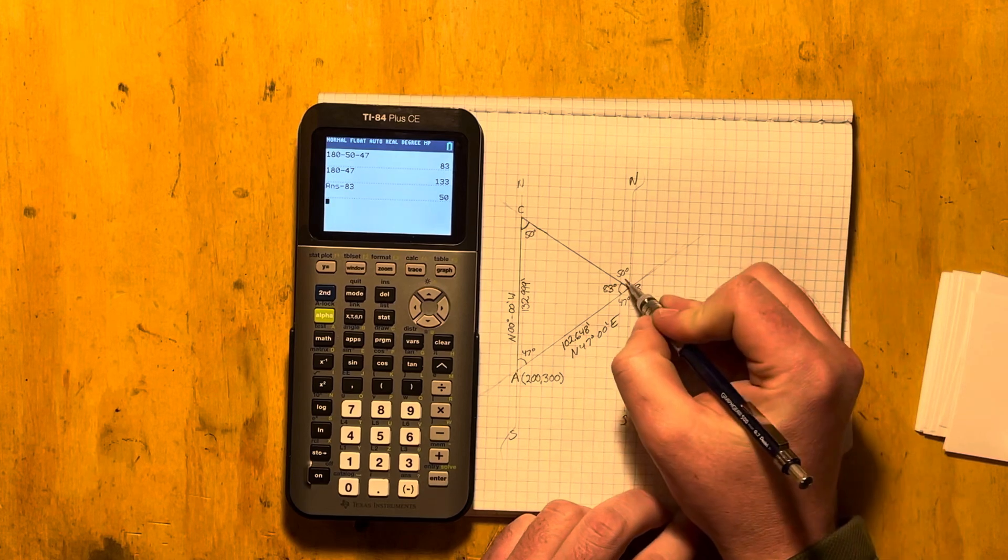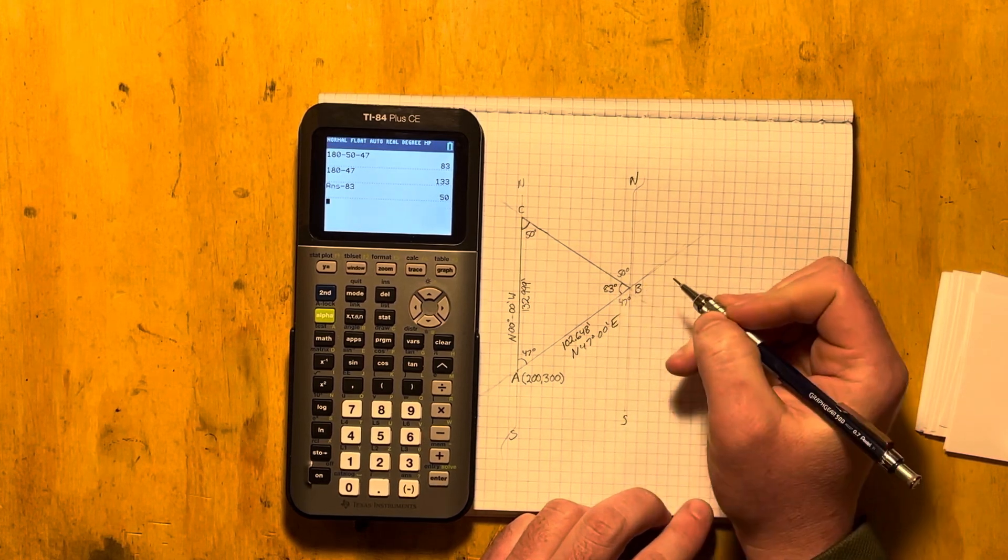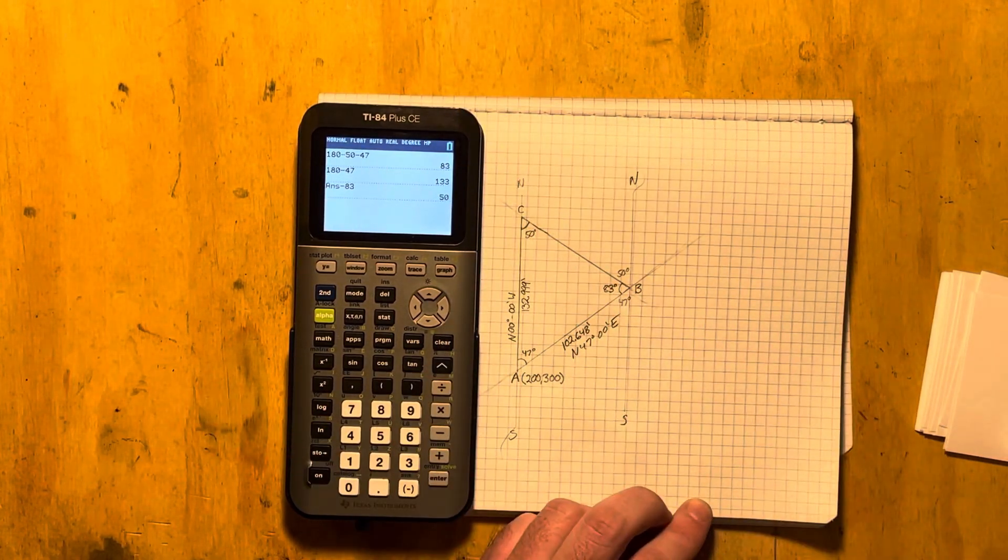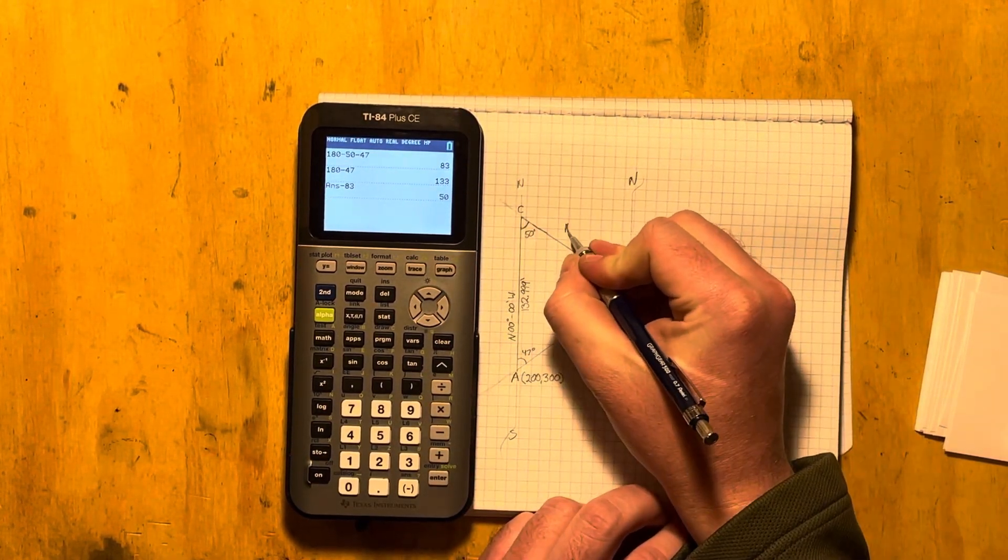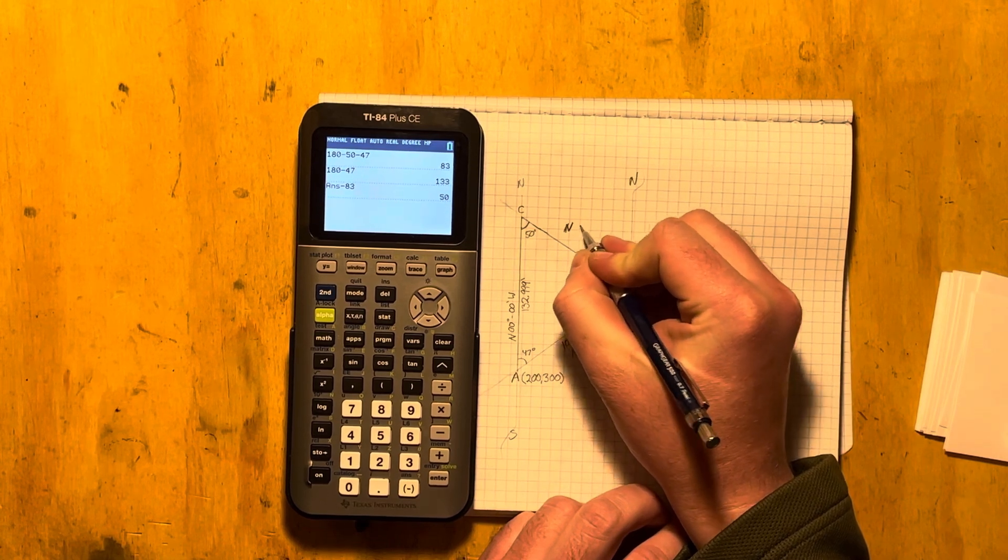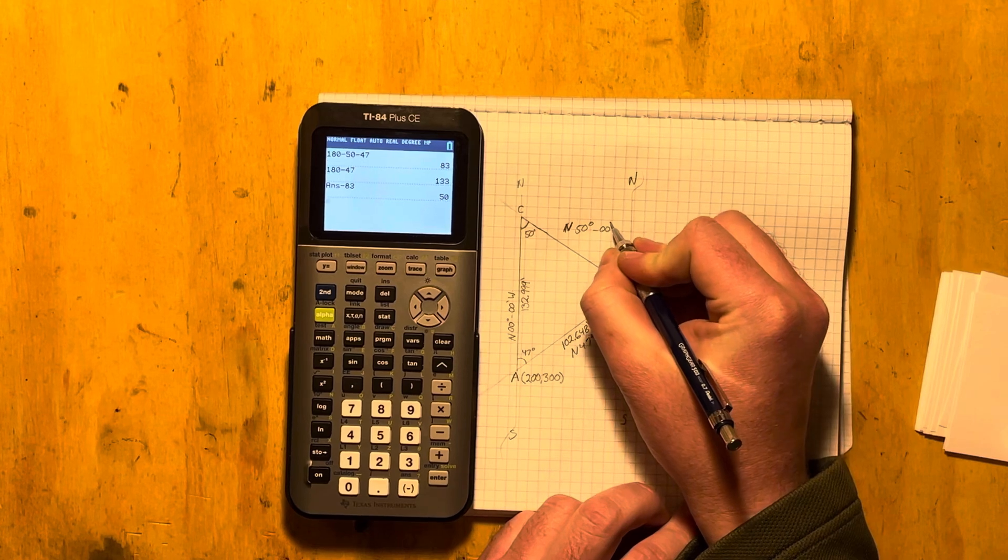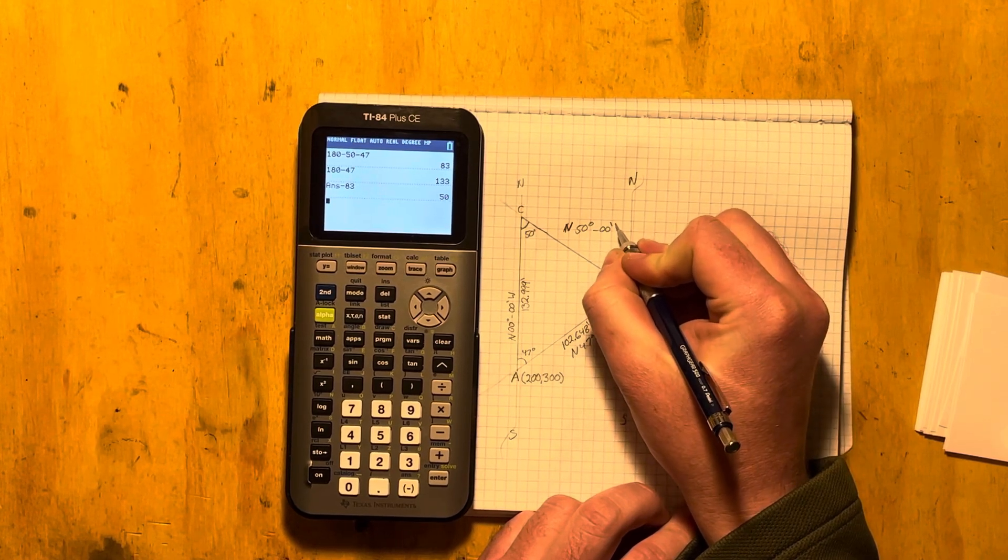So now we know that the line BC is north and it's facing west. So it's north, 50 degrees, zero minutes west.